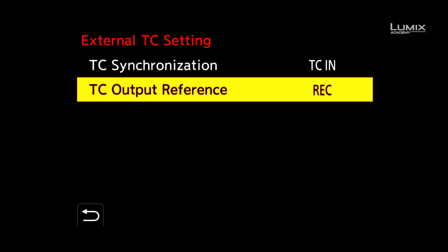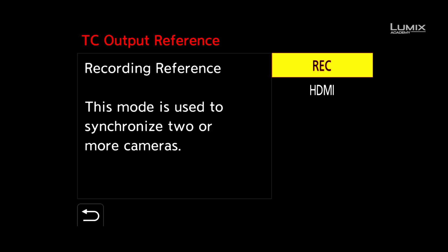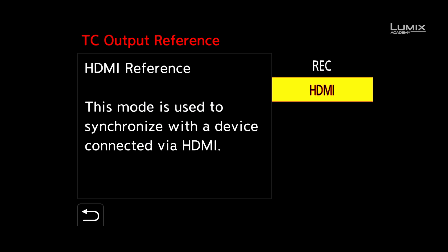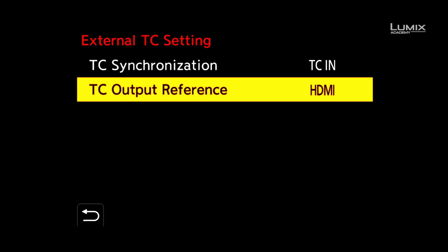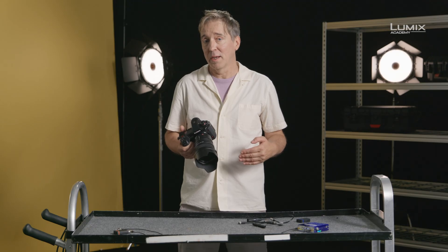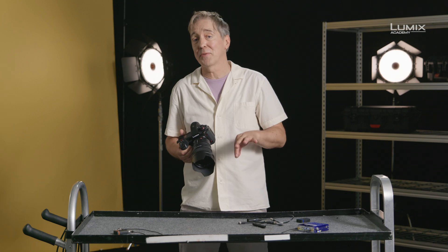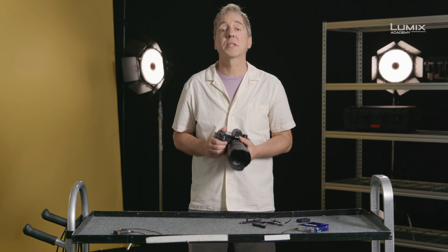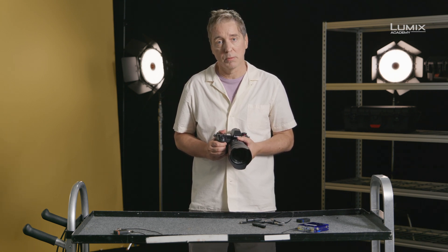The final option is timecode output reference, which allows you to choose between recording reference — the option you'll use in a multicam setting — or HDMI reference, which is used when you simply want to record externally via HDMI whilst retaining sync. It's important to note that certain timecode devices are more accurate than others, and there's always that possibility of drift. If you do get drift, always remember to re-sync your devices, and certainly at the start of each recording session ensure all are time-synced up. These are the timecode options on the Lumix cameras. Panasonic.